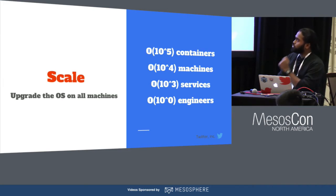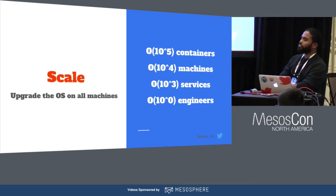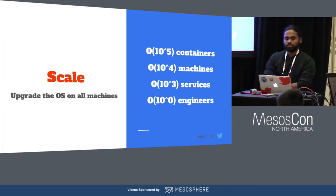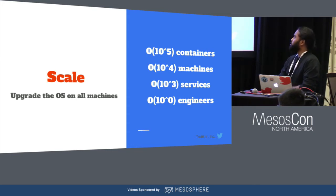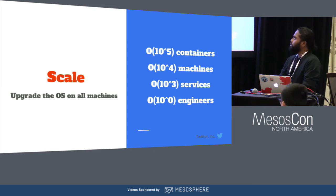We had to do this with a couple of constraints to make sure that there was zero impact to any running services, and we also had to do it in less than three months. To put things into perspective as to where the challenges actually come from, it's mostly due to the scale of Twitter's clusters. Our Mesos cluster runs hundreds of thousands of containers on tens of thousands of machines belonging to thousands of different services, and we manage all of these with a team of fewer than 10 engineers.